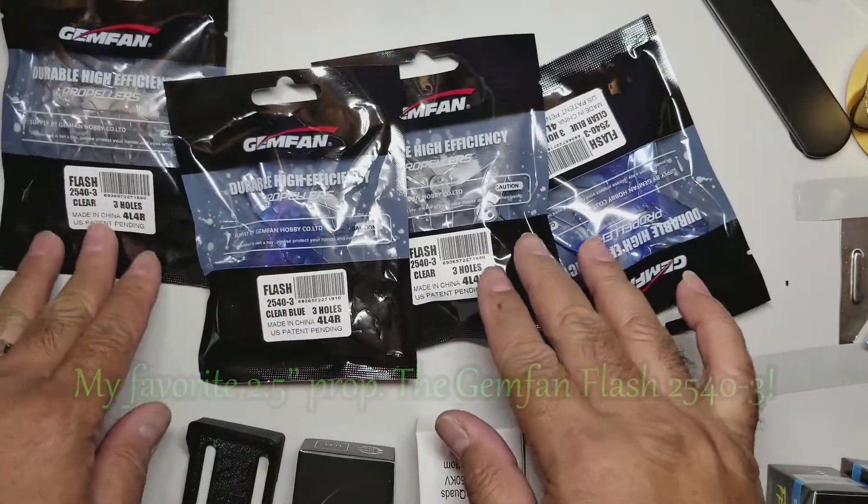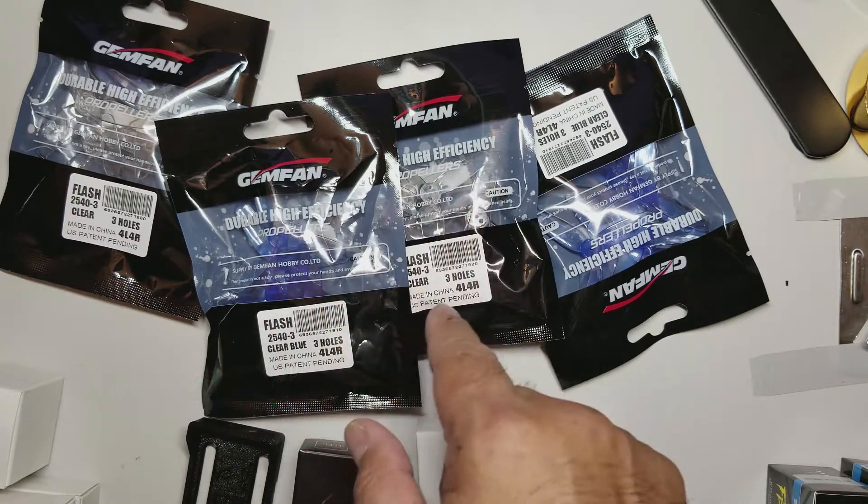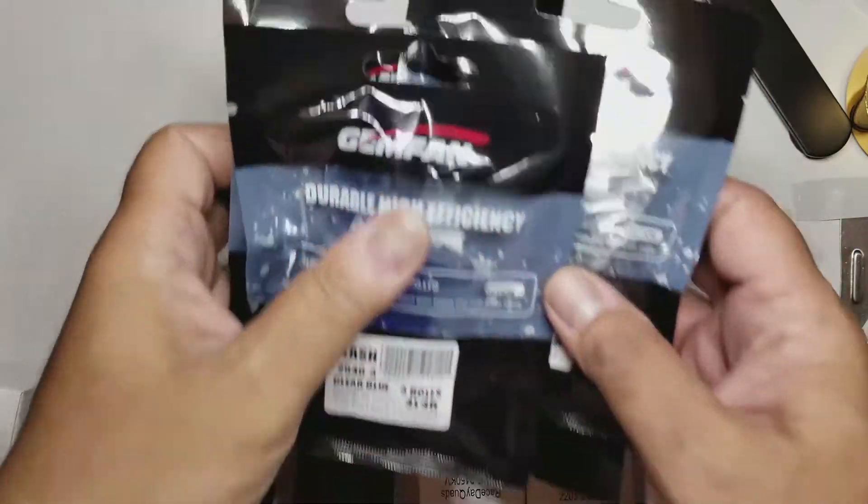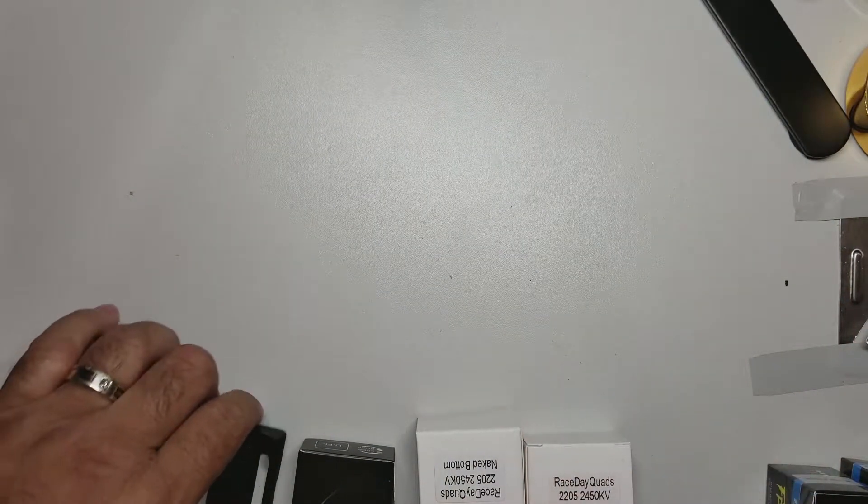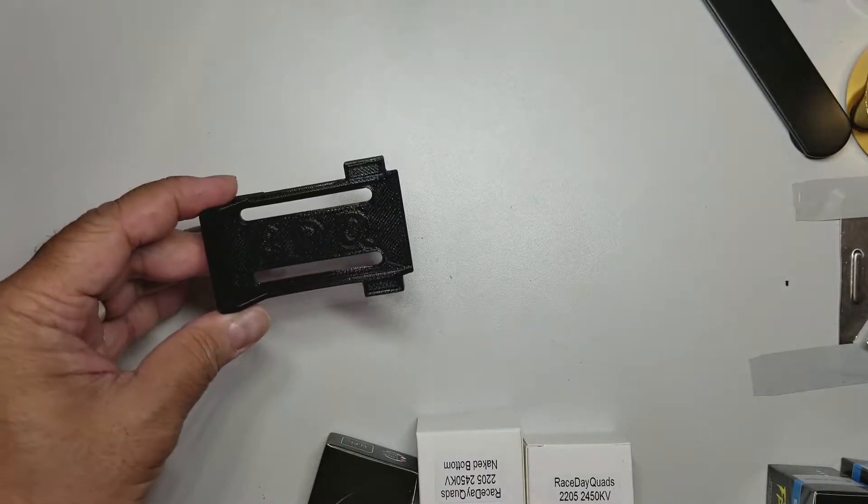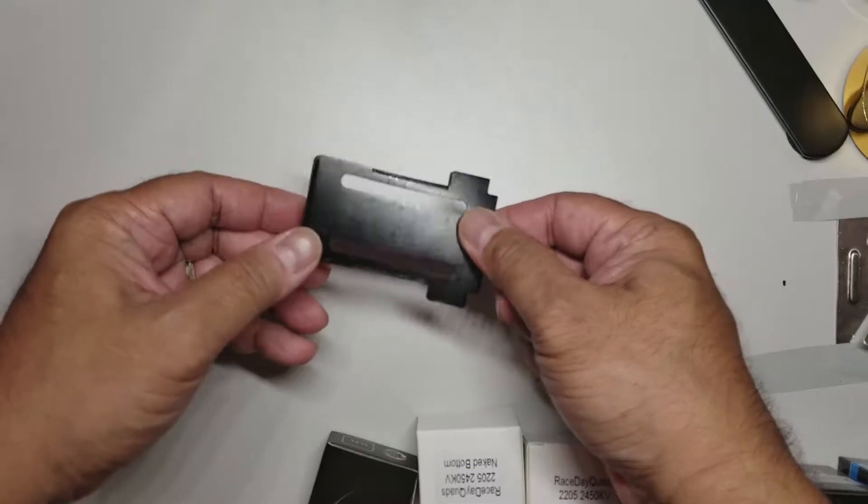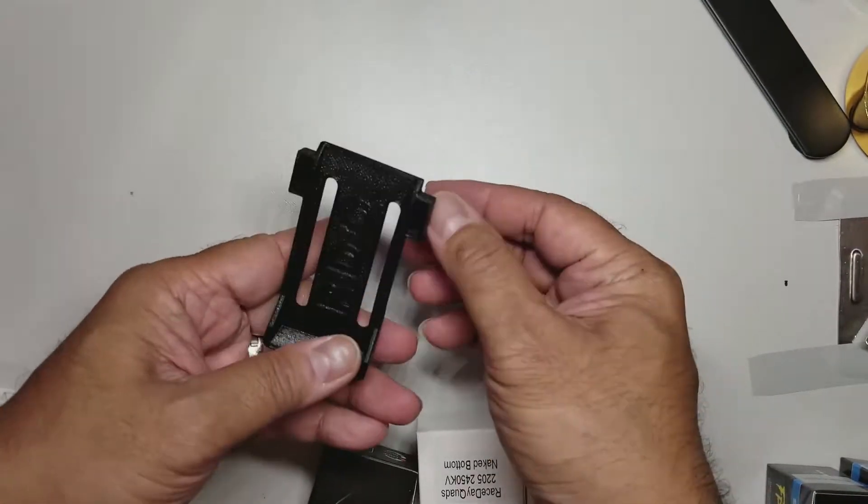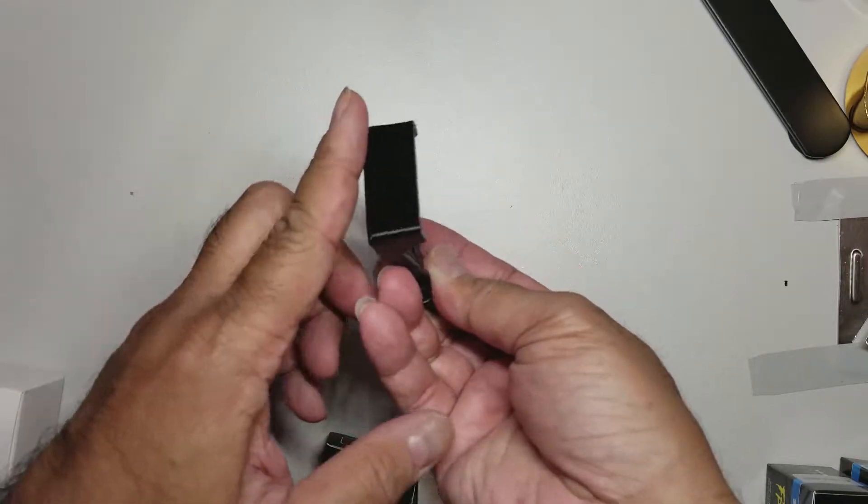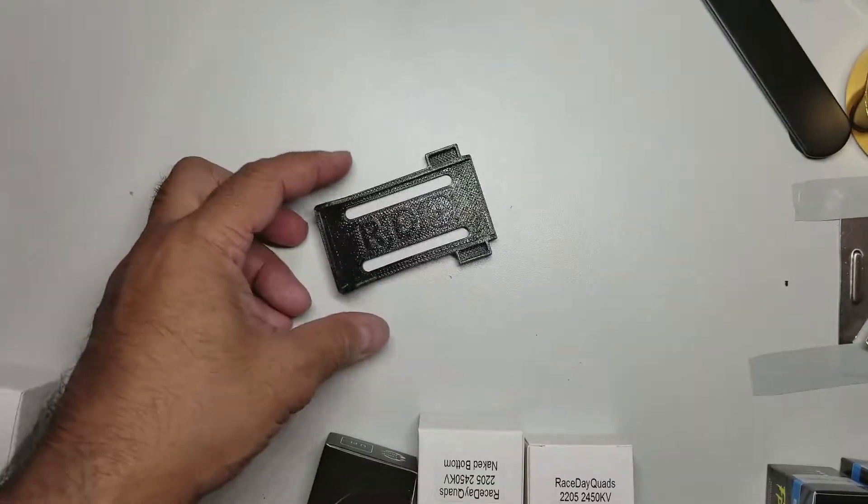And of course, a bunch more GemFan Flash. There's two sets in each of these bags. I like the blues and the clears for FPV, so I've got some more props. Then for the five-inch I got this cool little battery protector for bottom battery mount quads. This would work out really well. Saw this on Race Day Quads. It's got a little spot for your balancer plug and a nice nose protection thing here. I really need to get a 3D printer.